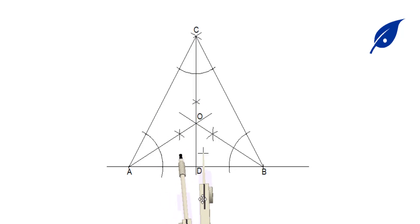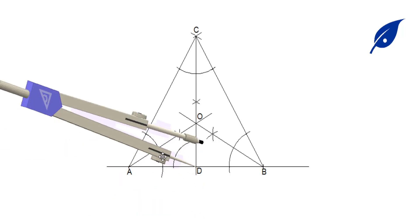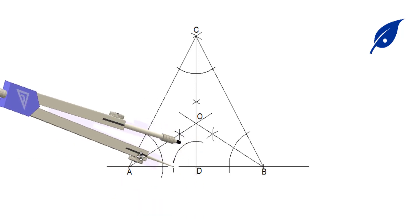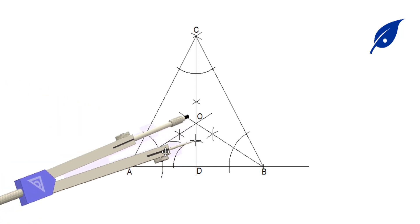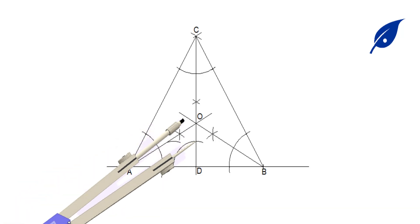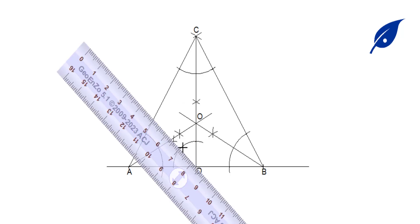Now we bisect angle ADC so that we'll have a point where it will meet the line EO. After bisecting this angle, we connect the line and it will meet line EO to get point E.